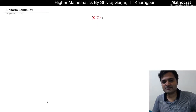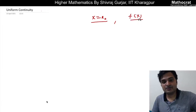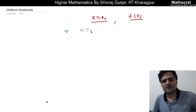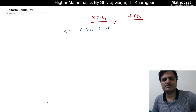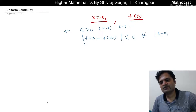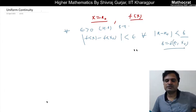So we have continuity. Let us say x equals to x-naught — a point where function f(x) is continuous. For each epsilon greater than 0, however small, there exists a delta such that modulus of f(x) minus f(x-naught) is less than epsilon, for each modulus of x minus x-naught less than delta. Here delta is a function of epsilon as well as the point x-naught.